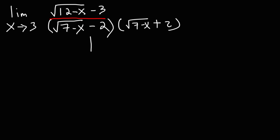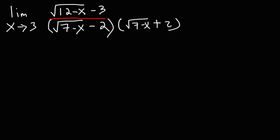All you need to do is change the sign from negative to positive — you simply need to reverse it. Since we're multiplying the denominator of the fraction by this value, we need to do the same thing with the numerator so that the value of the entire fraction doesn't change. That's just one of the rules of algebra.